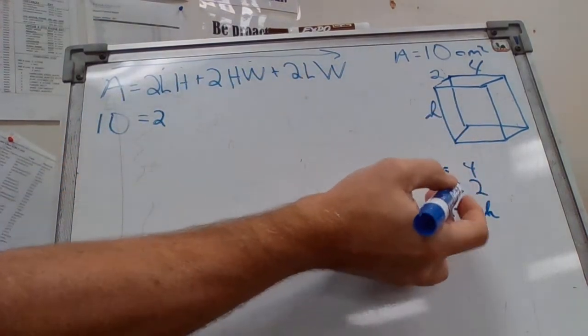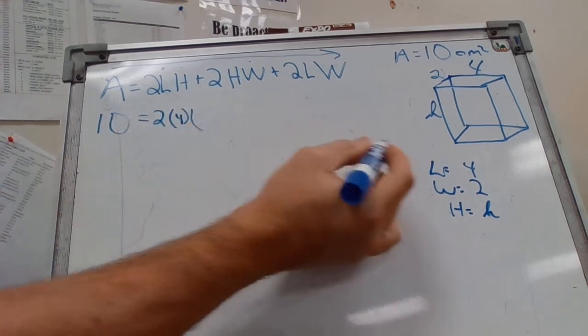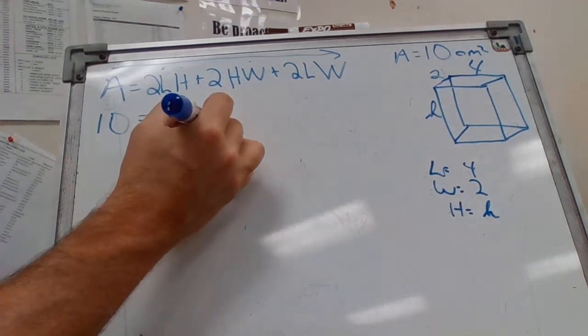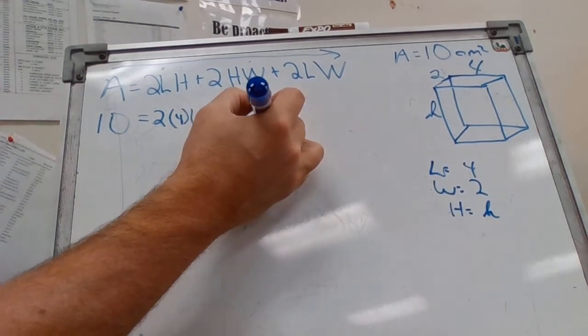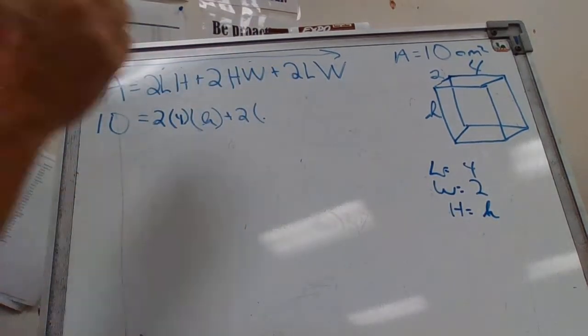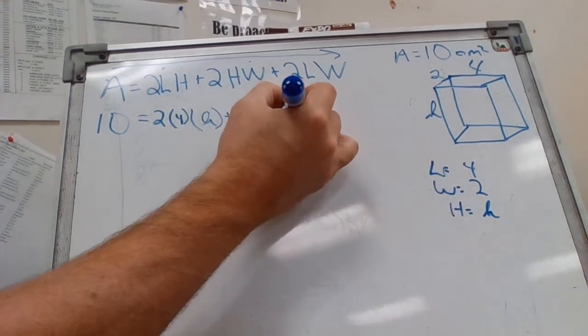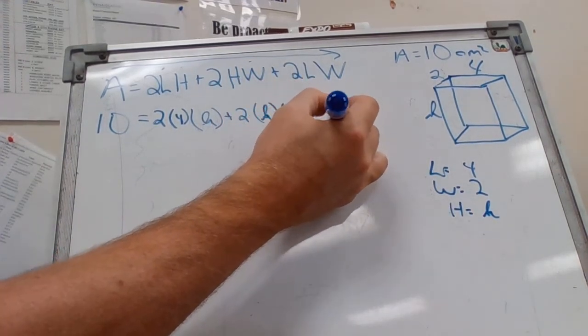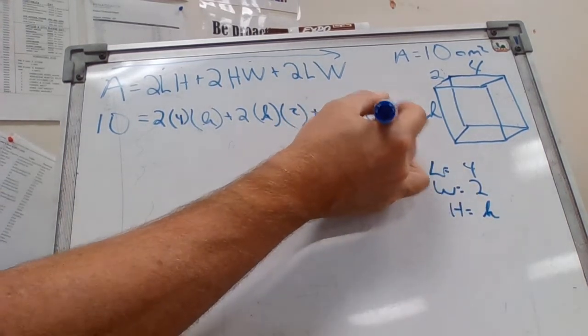Two, our length is four, our height is we don't know, plus two, our height is we don't know, so it's H. Our width is two, plus two, our length is four, our width is two.